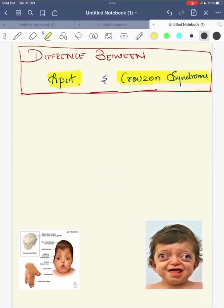Hello everyone, today we will discuss a short topic that is the difference between Apert and Crouzon syndrome. Both have a common feature that is brachycephaly. The child will present with brachycephaly in both Apert and Crouzon syndrome.